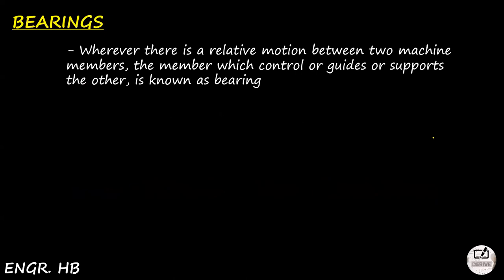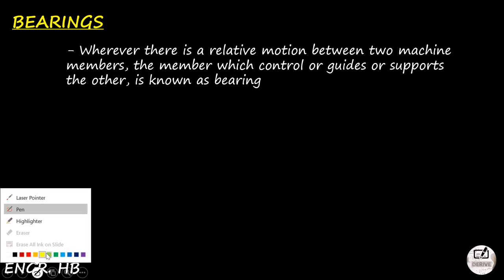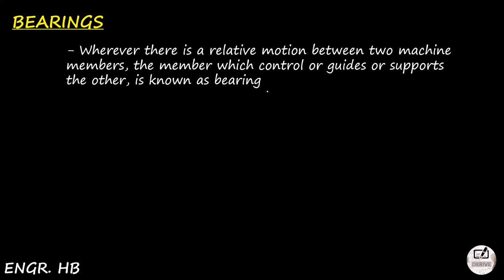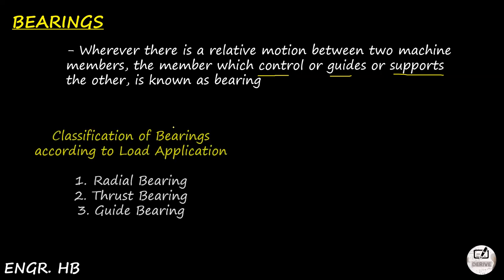So bearings — ano daw yung bearings? Wherever there is relative motion between two machine members, the member which controls, guides, or supports the other is known as a bearing. So siya ay isang relative motion na kung saan siya ay nagko-control, nag-guide, at nagsusuport sa kasama. In industrial uses, makikita natin siya commonly on machineries. We are all familiar with other types of bearings.